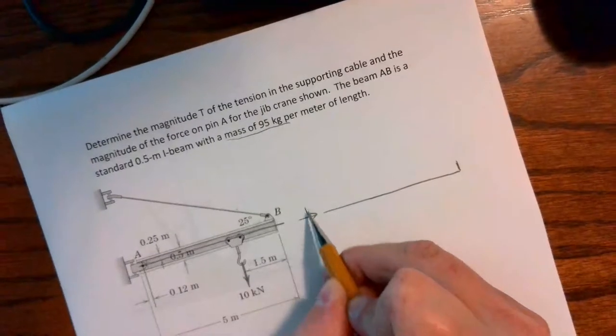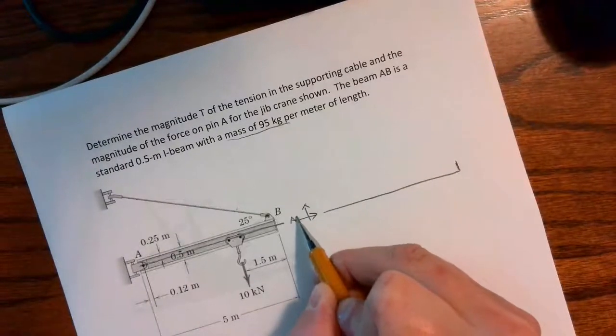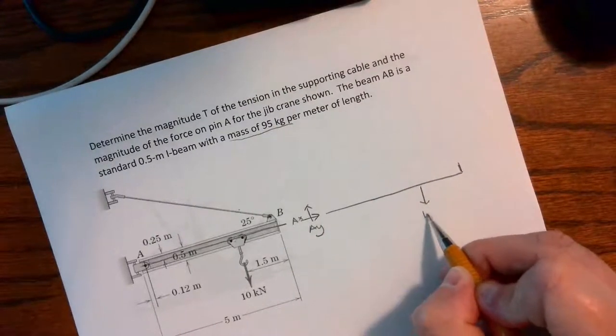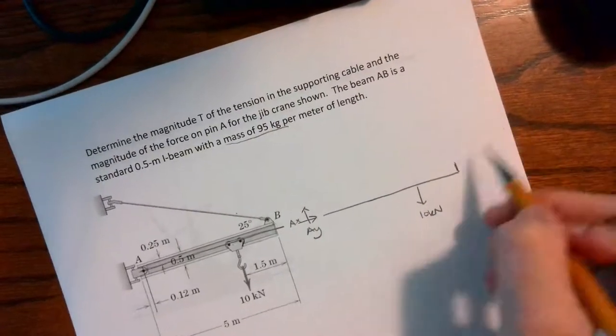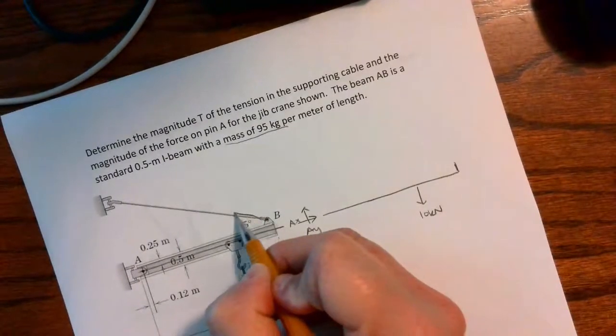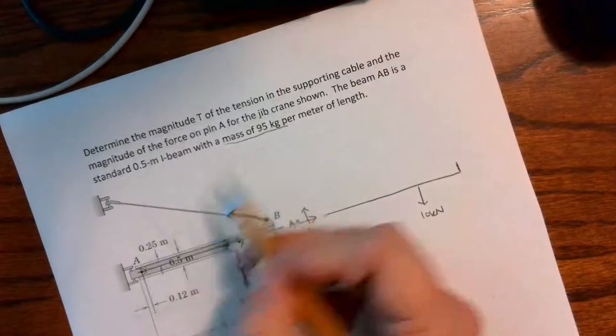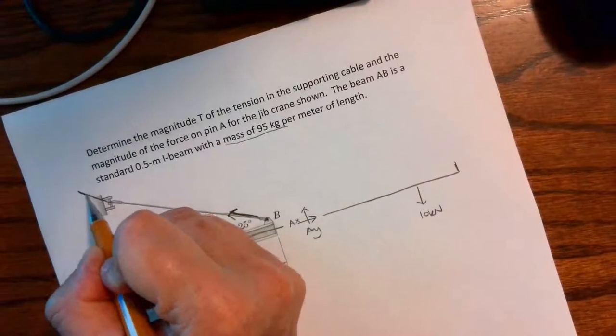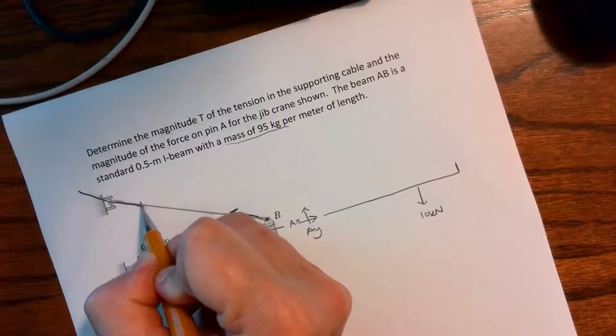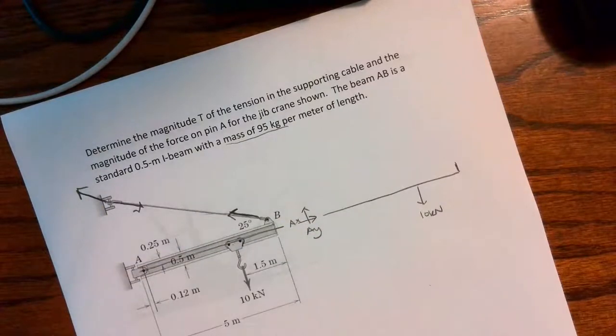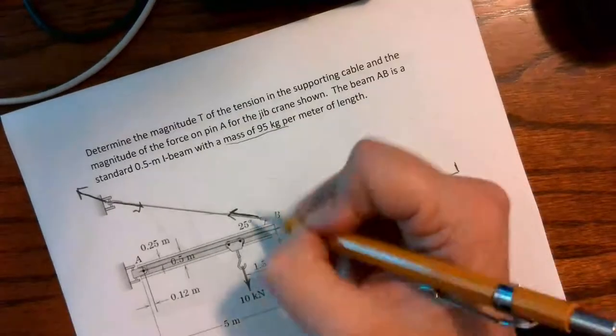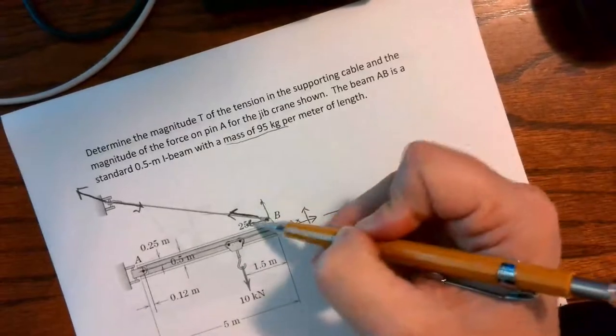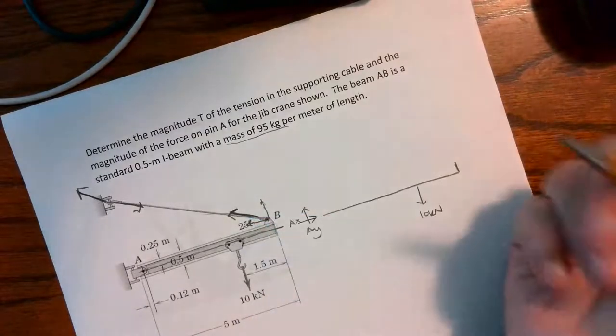Here at A I have a pin connection Ax, Ay. I have this force coming down of 10 kilonewtons and I have this tension cable, which is a two-force cable. The force is running along the direction of this line. If we were to find the reactions, if we're pulling down in tension, the reactions would have to be pulling up equal and opposite.